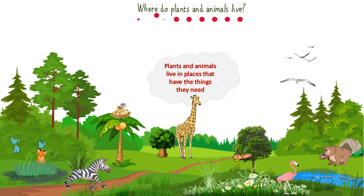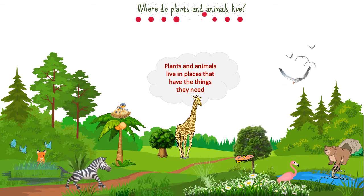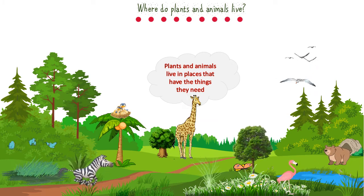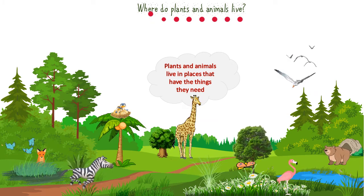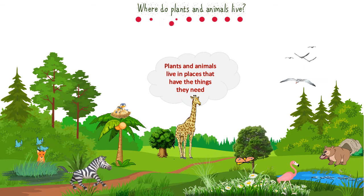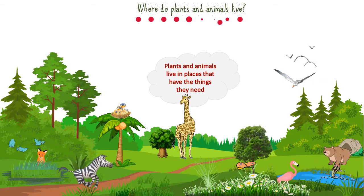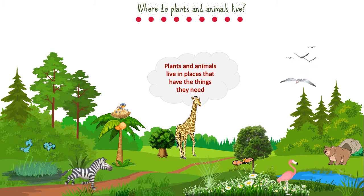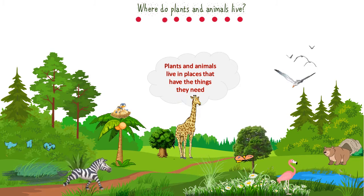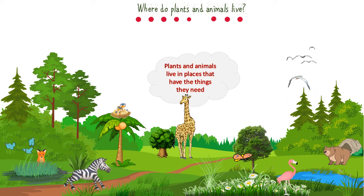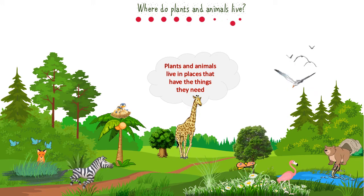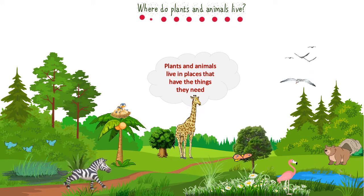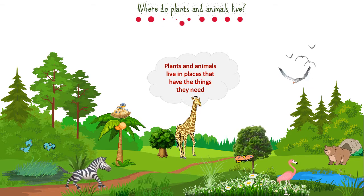Some plants and animals live in forests. Some of them live in deserts. Some other animals live in ponds, and some live in oceans. In this picture right here, we can see some kinds of different animals that live in a forest — the forest is their habitat.